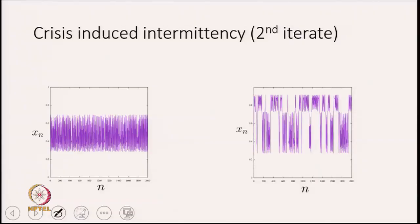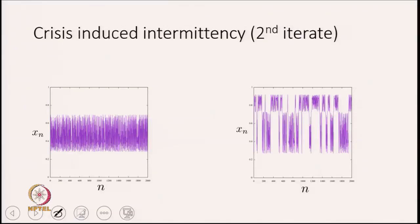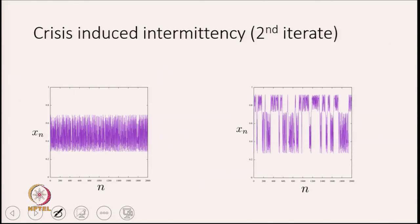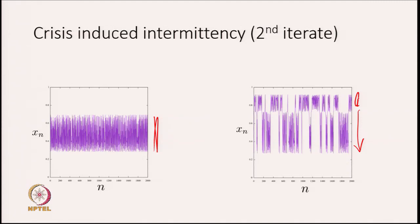The crisis-induced intermittency, looking at the second iterate, shows that prior to the merging crisis every second iterate stays on the same branch of the attractor, confined to just that branch. After the crisis, for some time it is on this branch, sometimes on the other branch, and so on — intermittent dynamics between two somewhat different kinds of motion, also characterized by power-law distributions.